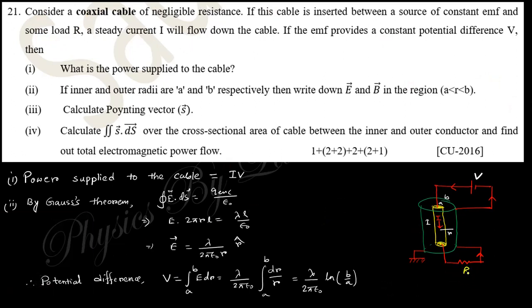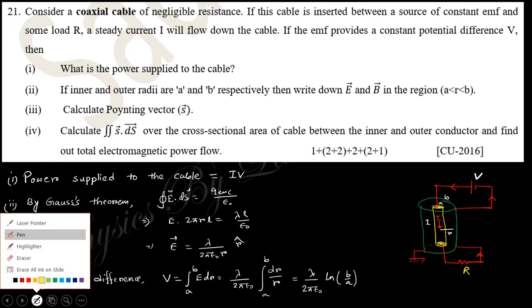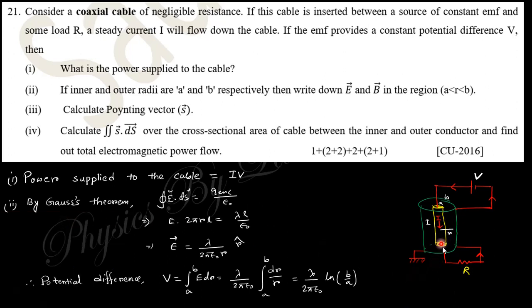The EMF is written as V. What is the power supplied to this cable? Power is IV. If the inner radius is a and outer radius is b, then find the value of E and B in this region.